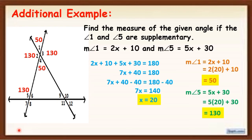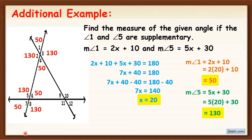Now let's proceed to these angles. Since angle 5 and angle 8 are vertical angles, the measure of angle 8 is 130. Angle 6 and angle 8 are supplementary, therefore the measure of angle 6 is 50. And angle 6 and angle 7 are vertical angles, therefore the measure of angle 7 is also 50.